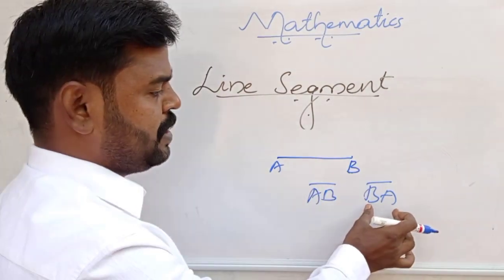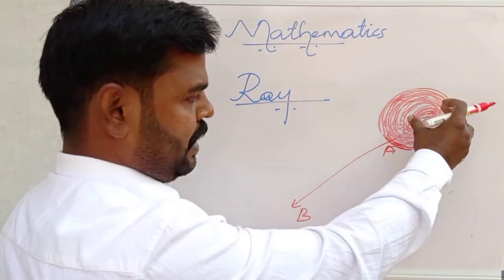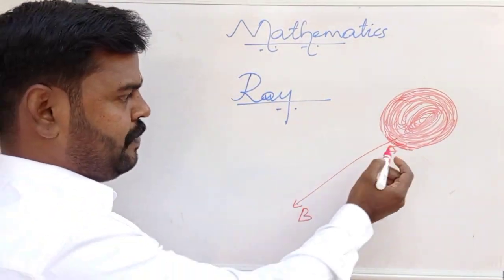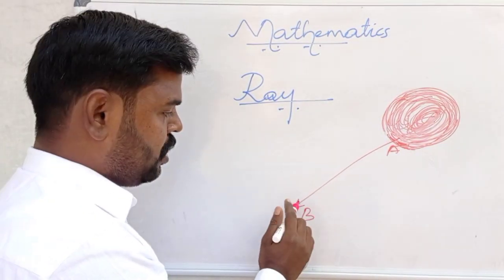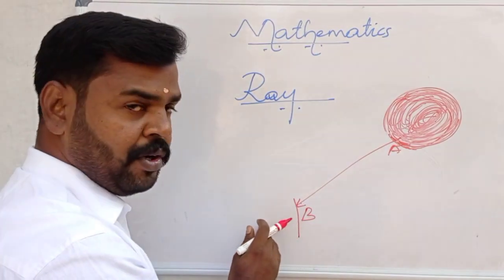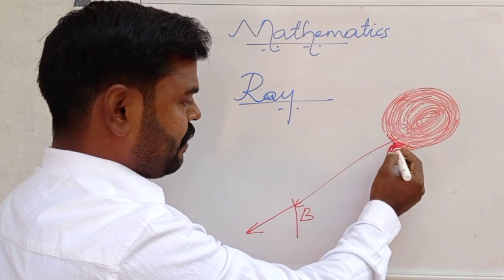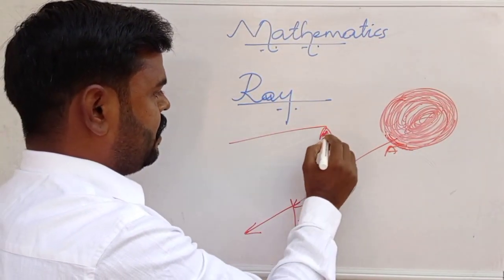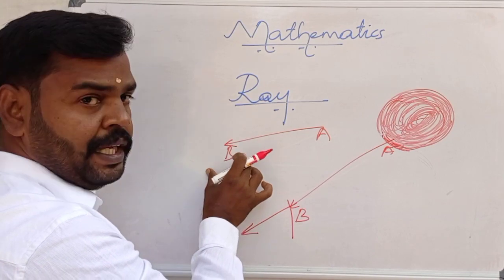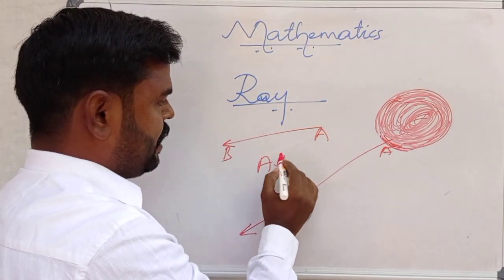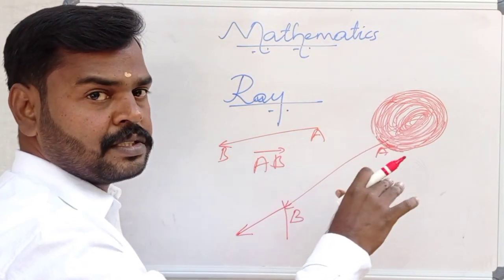Now let us discuss the word ray. We have heard the word sunrise — from the sun, rays come from here and start at a point A, going on in one direction. If there is any object, the ray will stop there; if there is no object, it keeps going on. So from point A, this side going on — here A is the endpoint or initial point, and this side going on toward B. So ray AB — one endpoint, extending infinitely in one direction.